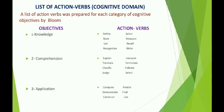For writing the objectives under the comprehension part, the teacher can use action verbs like: the child will be able to explain, translate, classify, judge, interpret, formulate, indicate or select. For writing the objectives for the application part, the teacher can use action verbs like: to compute, demonstrate, construct, predict, find and use.